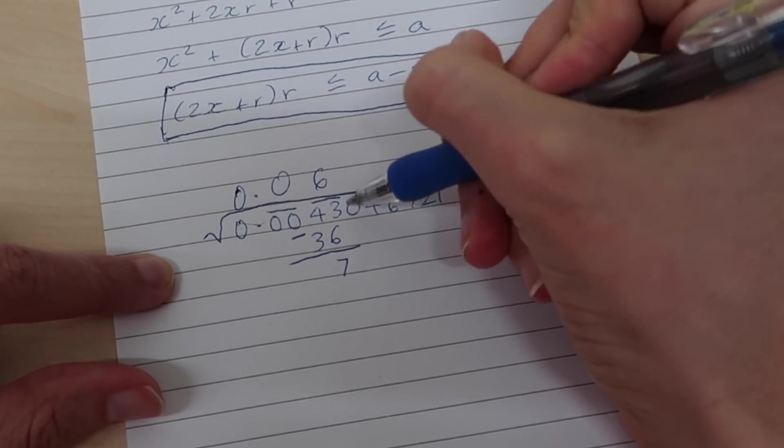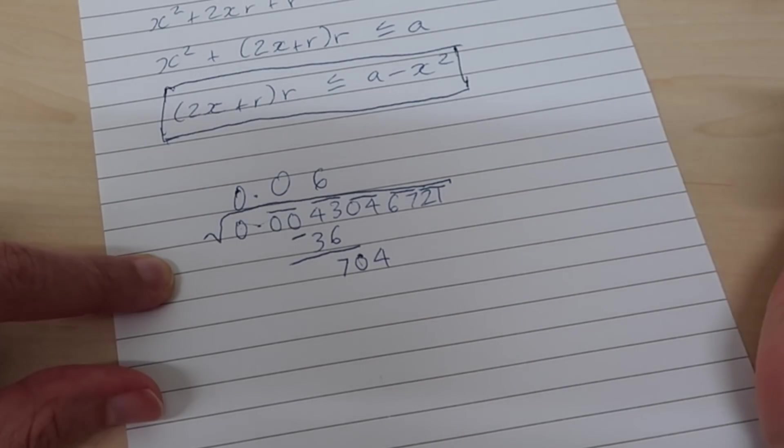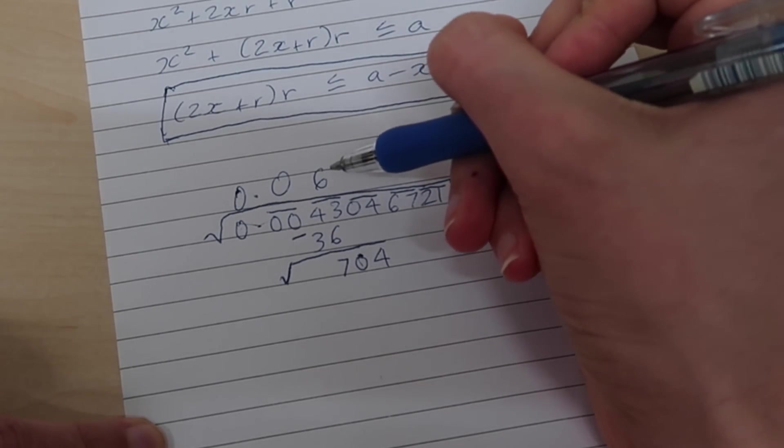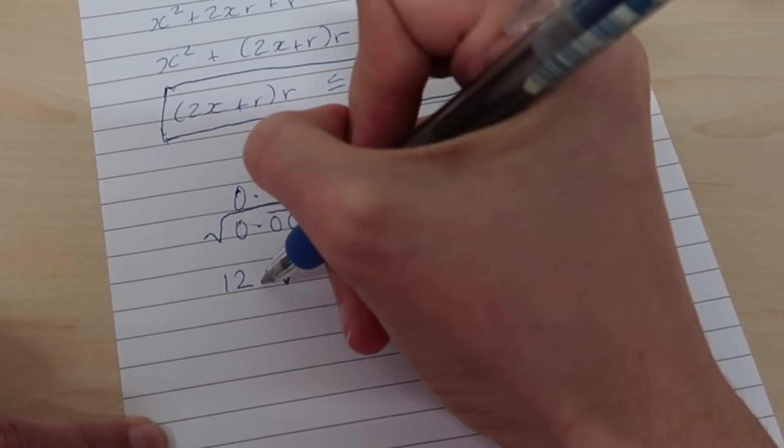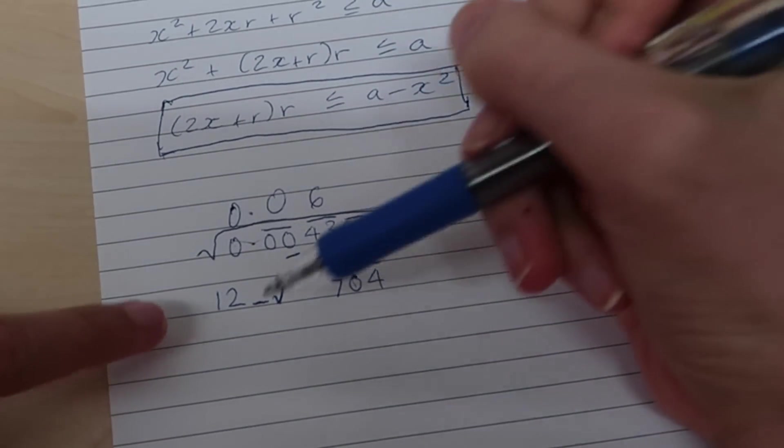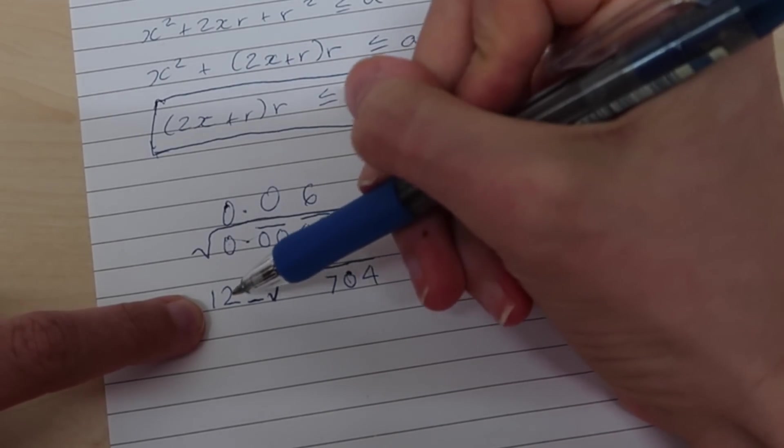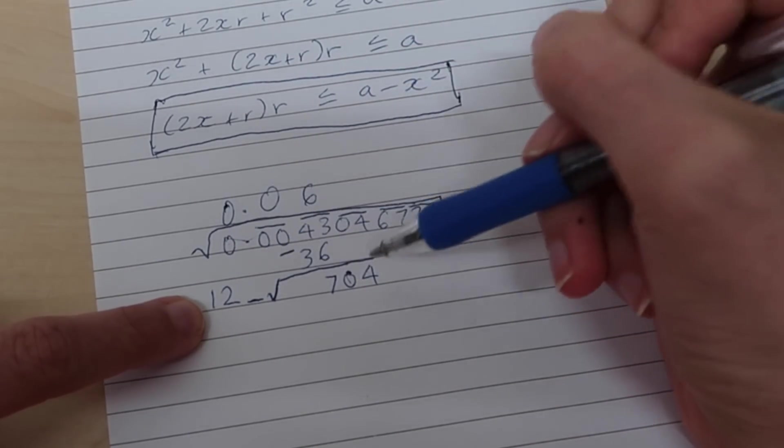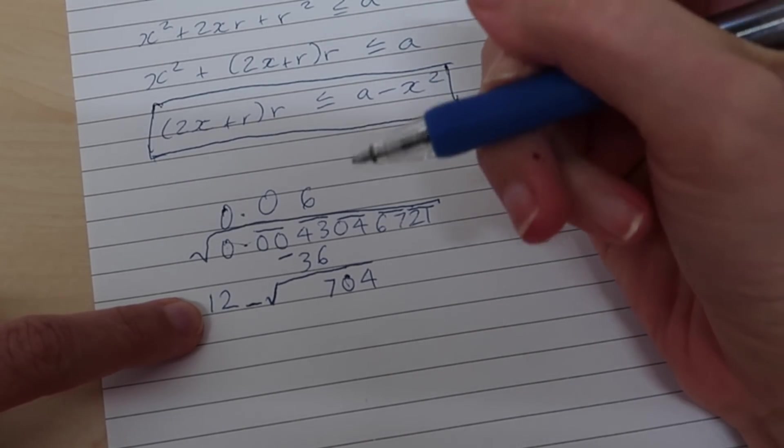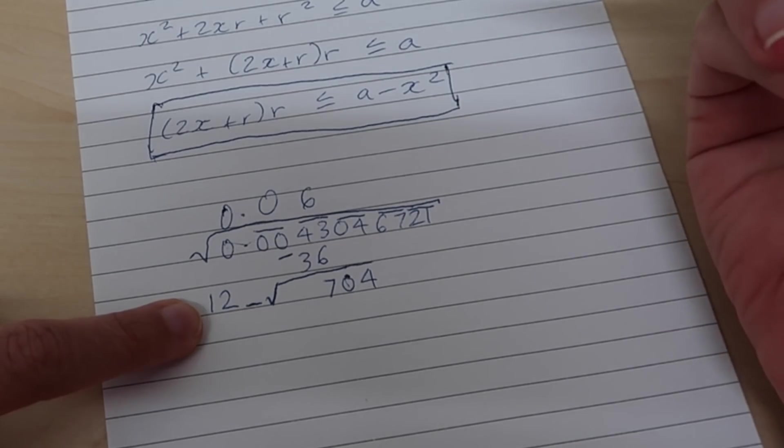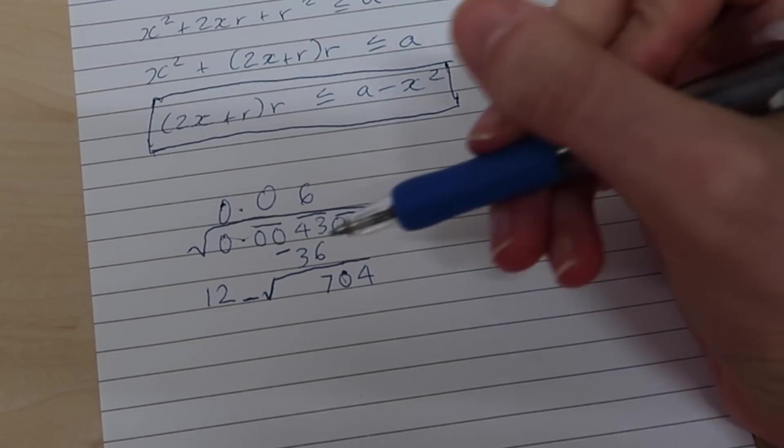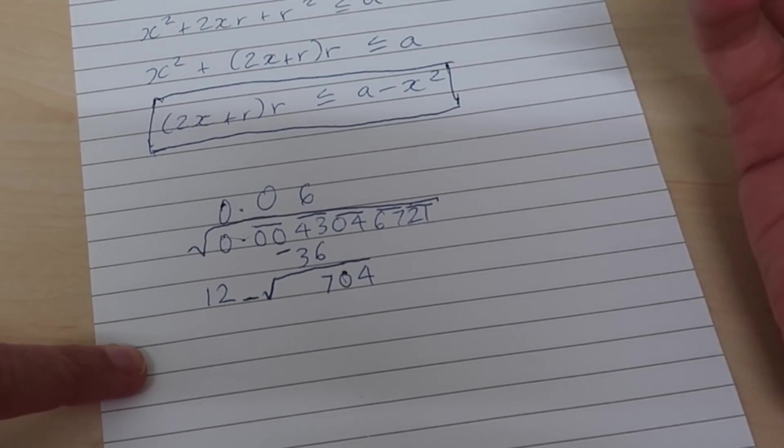Now, let's bring down our next set of two numbers. It's a zero and a four. So we've got 704 here. We're going to put a line in here. And then what we're going to do is take our previous number and double it. So two times six is 12. But then we've also left a little gap in here, because this is going to be 120 something. And we want to find what this digit should be such that 120 something times that something is less than or equal to 704. So for example, we could try 125 times five and see what that is equal to. I find that trying the five, first of all, is a good place to start, because you can see if you need to go higher or lower.